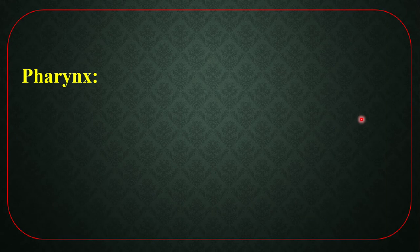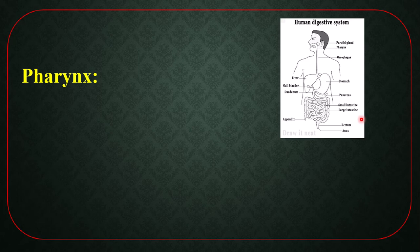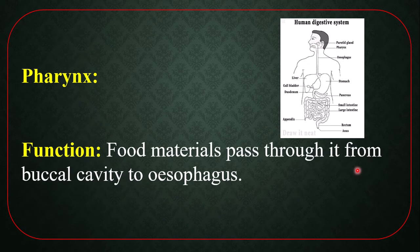Pharynx. The next part of the buccal cavity of our digestive system is pharynx. Follow the picture. Between the oral cavity and the esophagus, a short portion of our digestive canal is called pharynx. Food materials pass through it from the buccal cavity to the esophagus.